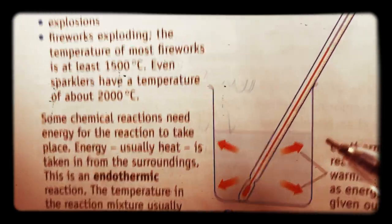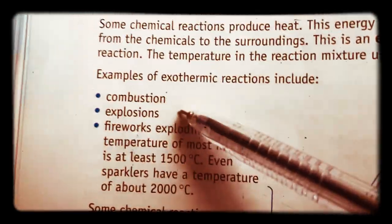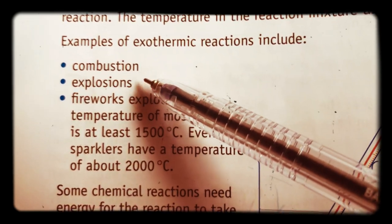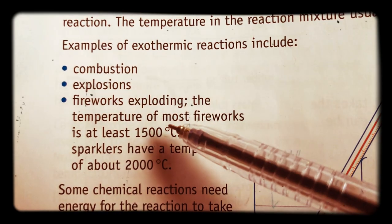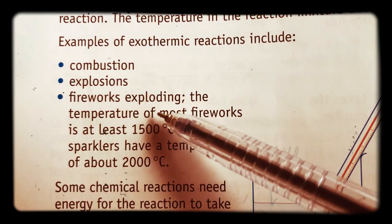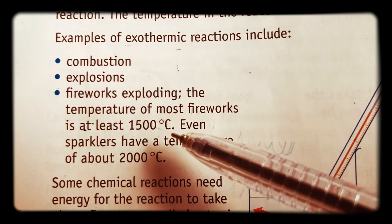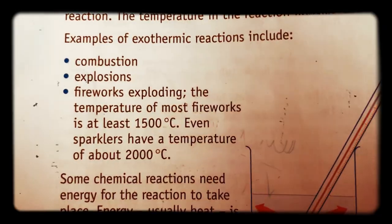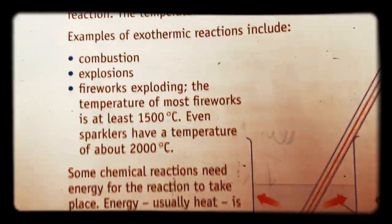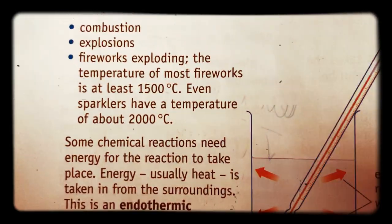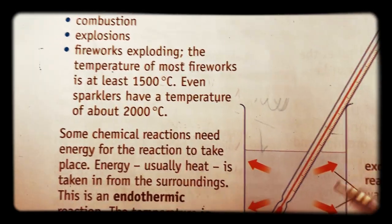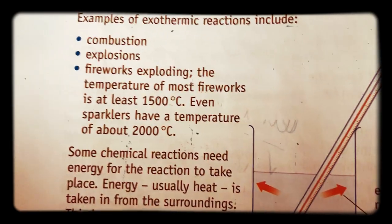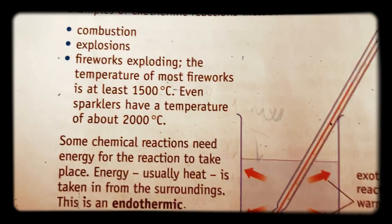We could have a very quick chemical reaction with a very rapid energy transfer — combustion, which is what we studied last lesson, explosions, firework explosions. Fireworks, when they explode around the Burj Khalifa or on special events, have a temperature of at least 1,500 degrees centigrade. Even sparklers have a temperature of about 2,000 degrees. We have to be very careful when we handle sparklers — once a sparkler goes out, we must put it in a glass of cold water to make sure it cools down and we don't scar ourselves.